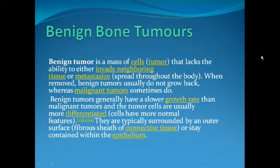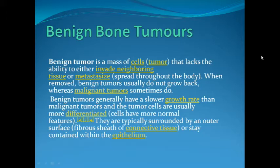Benign bone tumours are those that are not locally aggressive — they don't invade the neighbouring tissues and they don't spread to distant tissues by the process known as metastasis. Benign bone tumours have less tendency of recurring once they have been surgically removed, are characterized by a slower growth rate, and histologically their tumour cells are more differentiated with more normal features and less atypia. They are typically capsulated, surrounded by a fibre sheath of connective tissue.